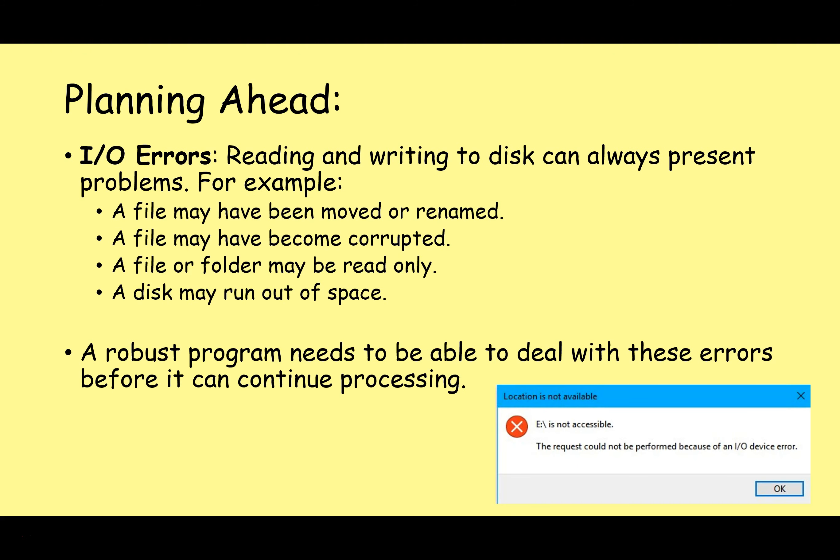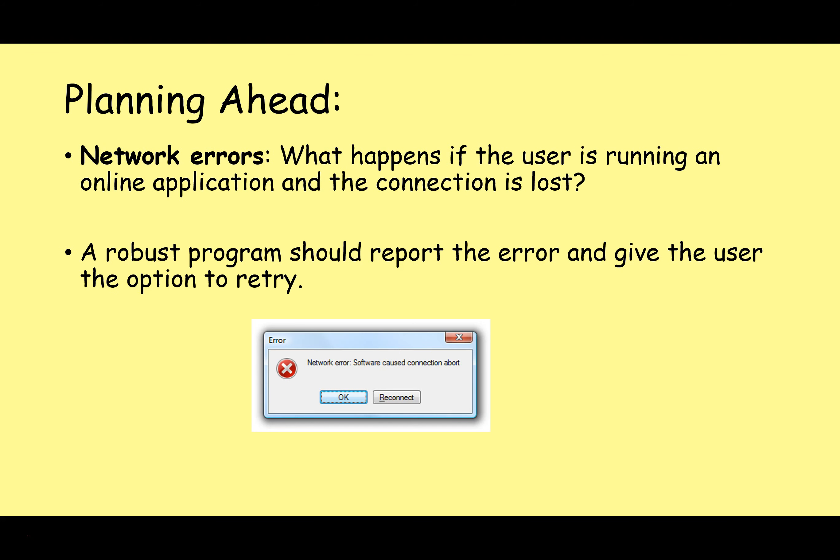We could also have input/output errors. Anytime you're reading or writing from a file, you can always have problems. For example, a file may have been moved or renamed, a file may have become corrupted, a file or folder may be read-only when we're trying to write to it, or a disk may have run out of space. A robust program needs to be able to deal with all of these errors before it can continue processing. Anytime you do any sort of input/output, you have to be planning for errors that could occur.